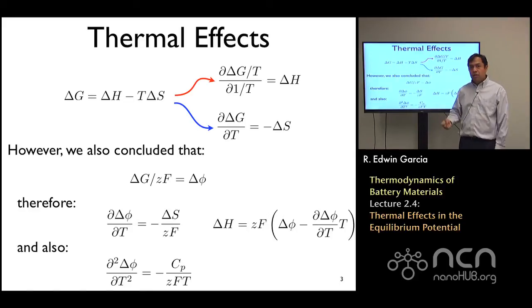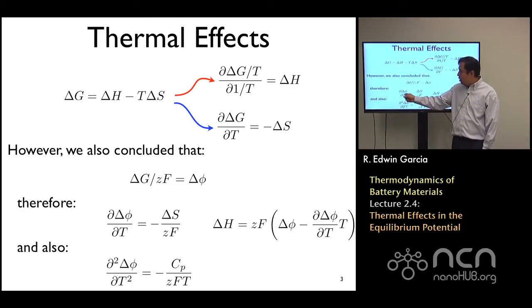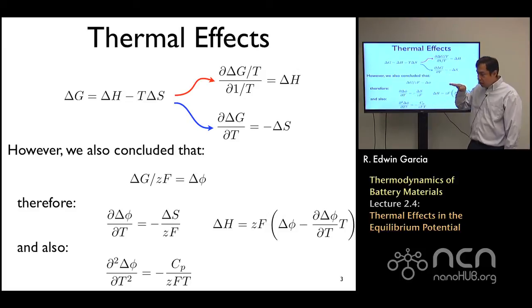The heat capacity for a stable system is known to be positive, so that means that not only is the slope of the voltage with temperature negative, but as it comes down, it'll come down with a negative curvature. Basically, it will not only come down, but it will also bend downwards as the temperature increases. What does that mean graphically?